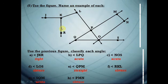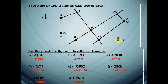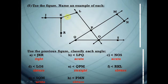Using the same figure, classify each angle. Angle JKR is a right angle. Angle LPQ is an acute angle. Angle NOS is an acute angle. Angle LOS is an obtuse angle. Angle QPM is a straight angle. Angle RKL is an obtuse angle. Angle SQM is an acute angle. And angle PMN is an obtuse angle.